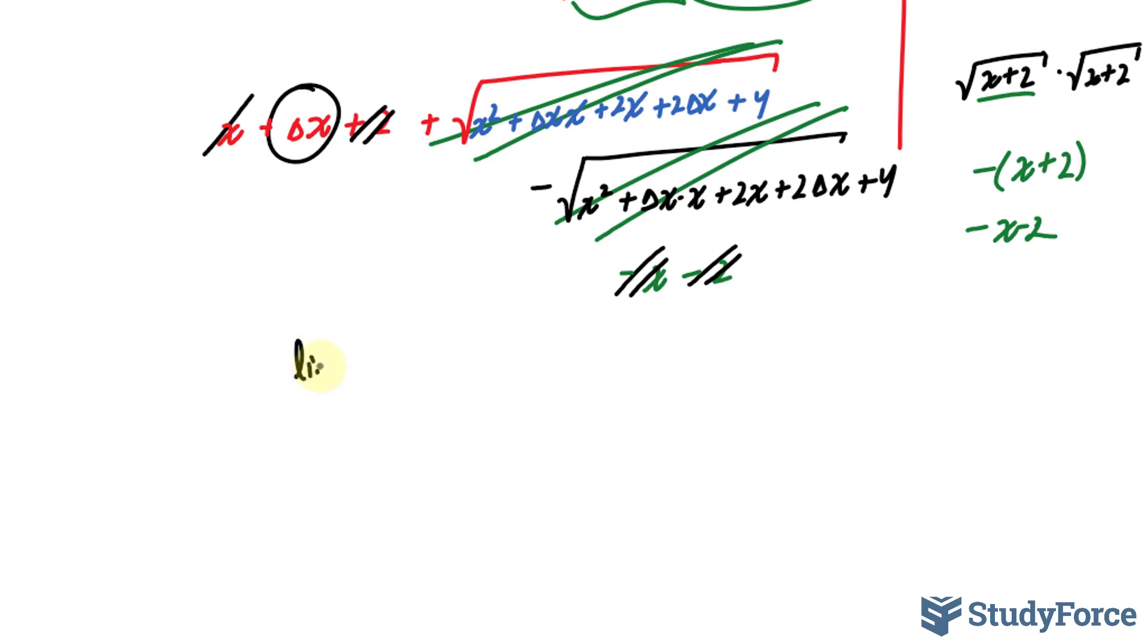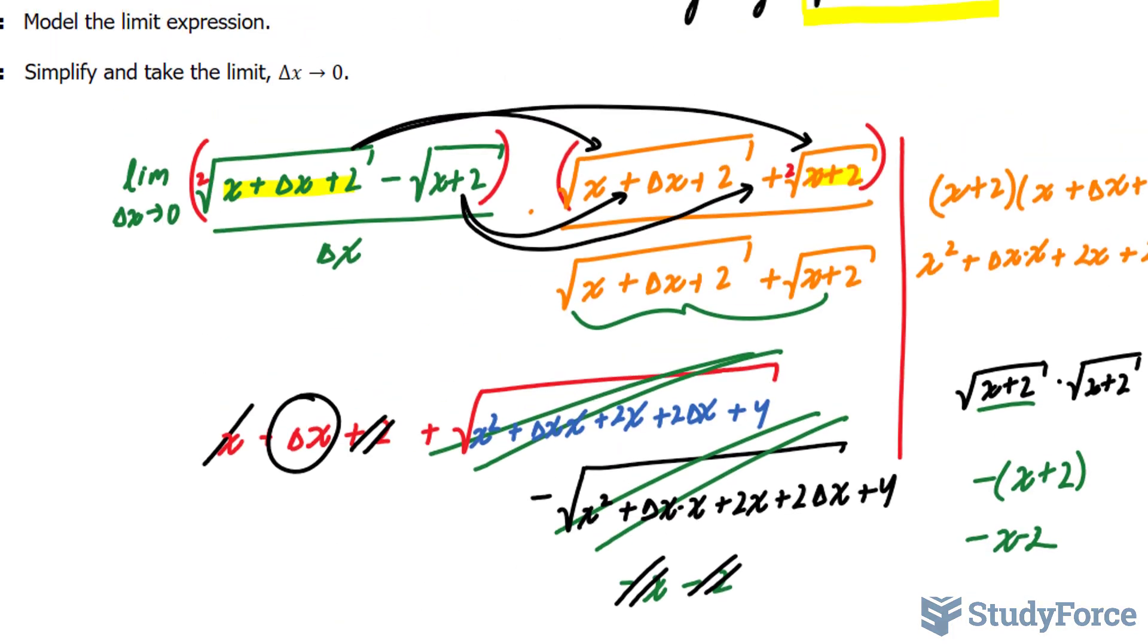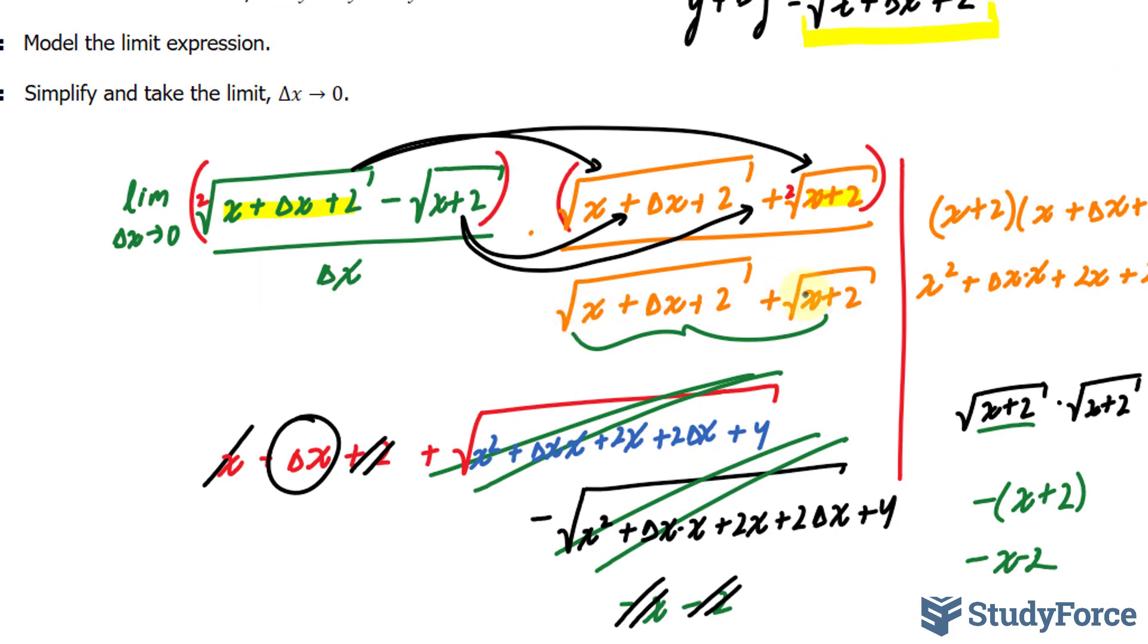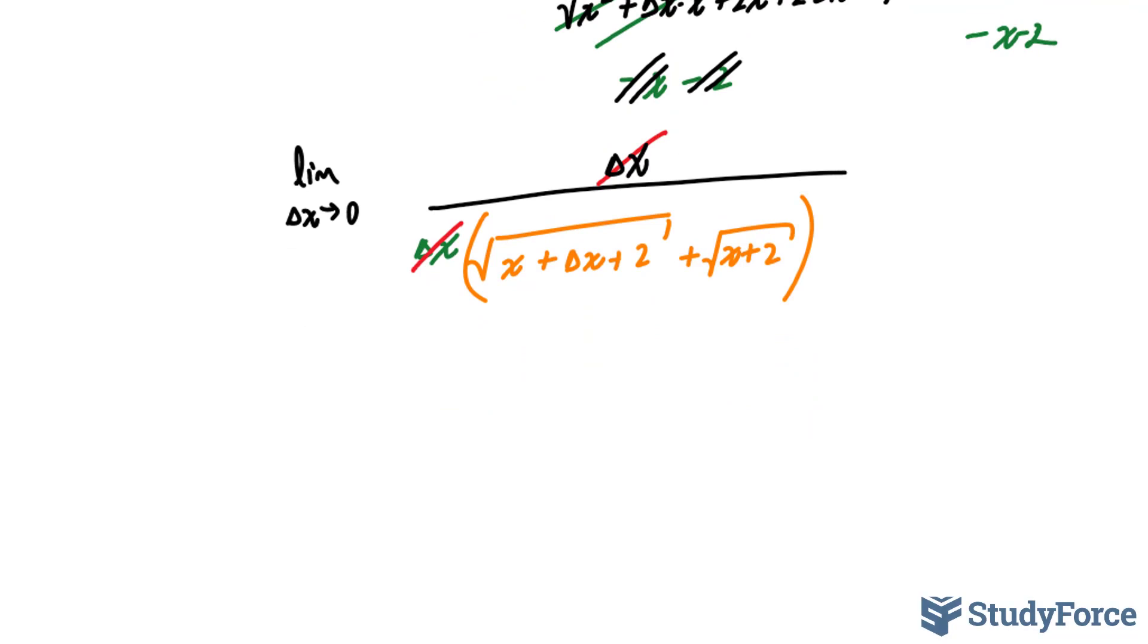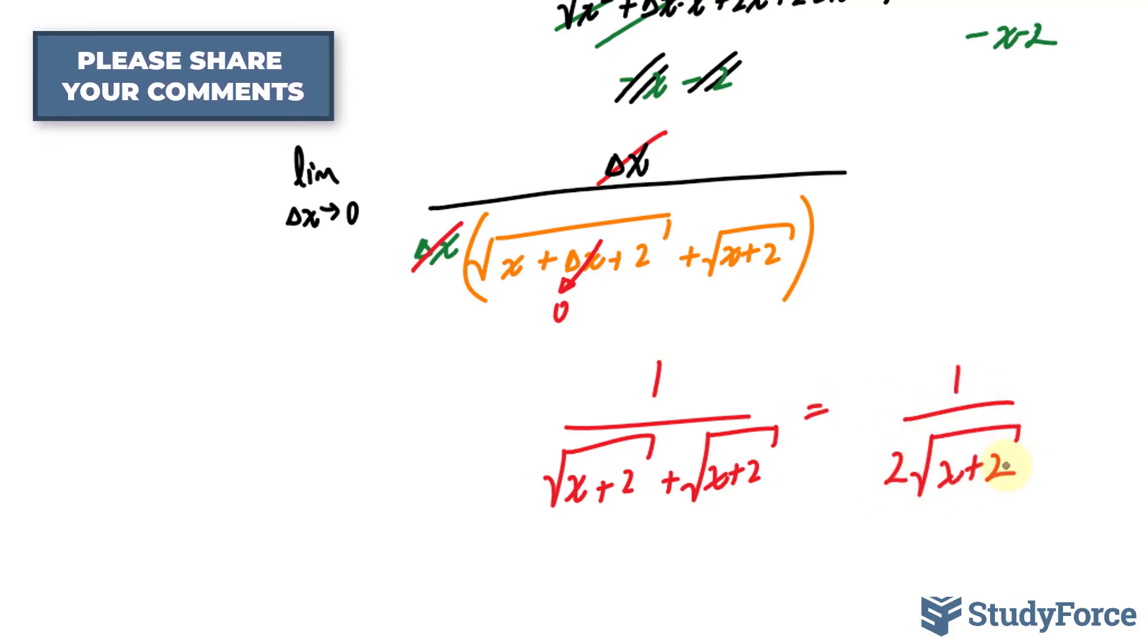Let's write that down. The limit as delta x approaches 0. The numerator is delta x. And the denominator, let's go back and see what it is: delta x times the following. Now that I've written it down nicely, delta x in the numerator and delta x at the bottom will cancel out. And if I take the limit as delta x approaches 0 for this term, this goes to 0, leaving us with 1 over the square root of x plus 2 and another square root of x plus 2. There are two square root of x plus 2's. So this becomes 1 over 2 times the square root of x plus 2. That right there represents the derivative of our equation.